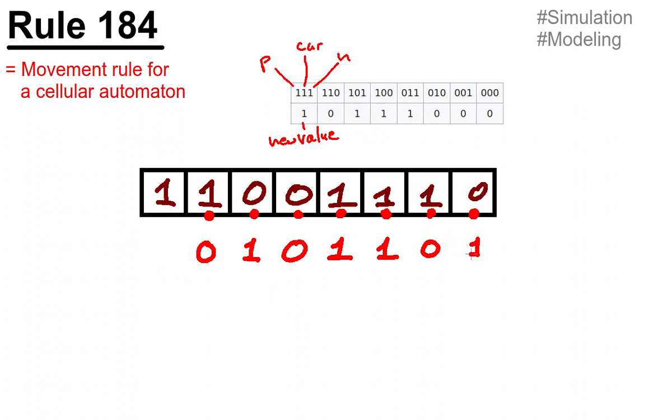So we end up with a one and same goes for this one. We have the previous cell of zero and the next cell of one. So we have a pattern of zero one one, which is this one. So we write a one.